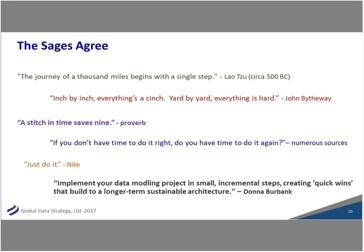A lot of folks who do modeling tend to be academic and can overthink things. The idea of agile is to iterate — put up 80% that you know is right, and someone will tell you it's wrong. Don't take that personally. Implement your data modeling project in small incremental steps, creating quick wins that build to a longer-term sustainable architecture. You can do data modeling in an agile way in small steps, build quick wins, and get to that enterprise model over time within the sprint lifecycle.